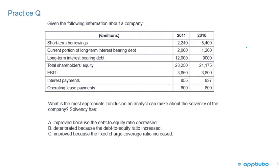We'll do one practice question to finish this LOS. We're given the following information about a company: short-term borrowings, current portion of long-term interest-bearing debt, long-term interest-bearing debt, total shareholders' equity, EBIT, interest payments, and operating lease payments for 2010 and 2011. The question asks: what is the most appropriate conclusion an analyst can make about solvency? Options are: A) improved because the debt-to-equity ratio decreased, B) deteriorated because the debt-to-equity ratio increased, or C) improved because the fixed charge coverage ratio increased.